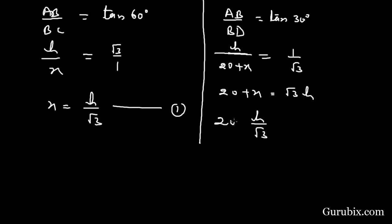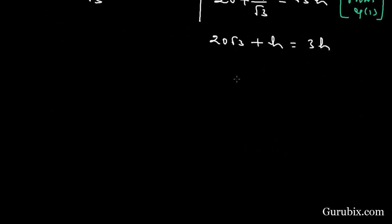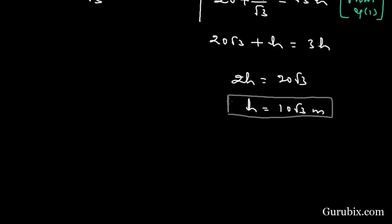Substituting from equation number one, we multiply both sides by √3, giving us 20√3 + h = 3h. This means 2h = 20√3, therefore h = 10√3 meters.